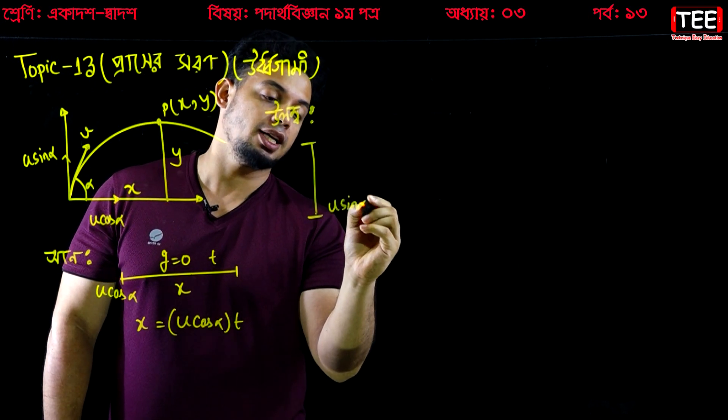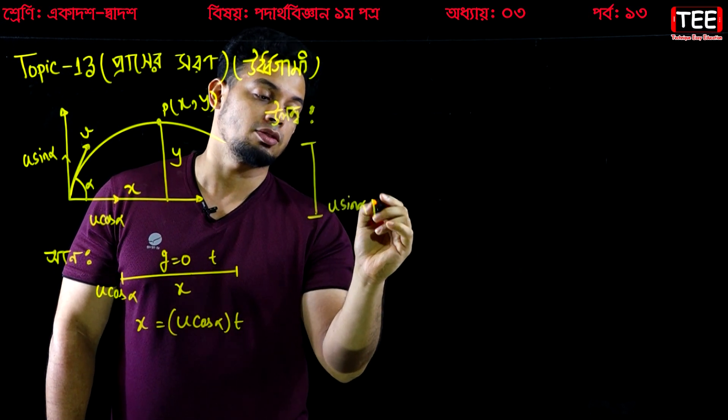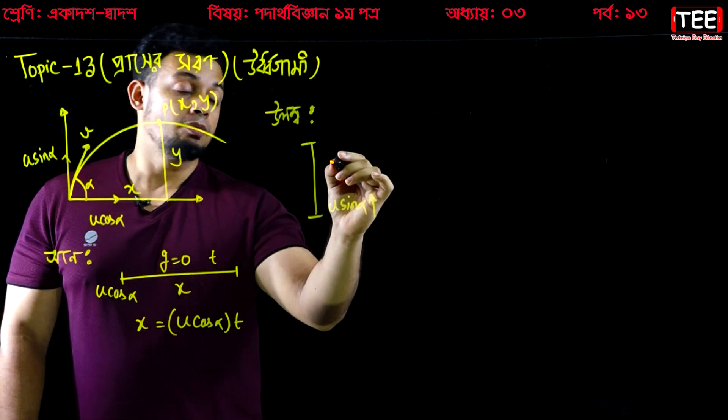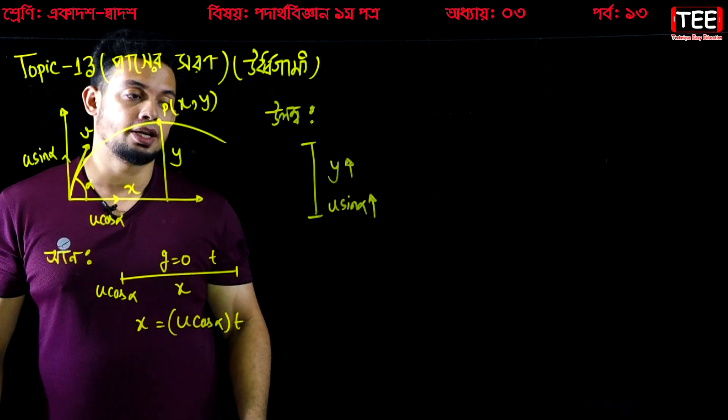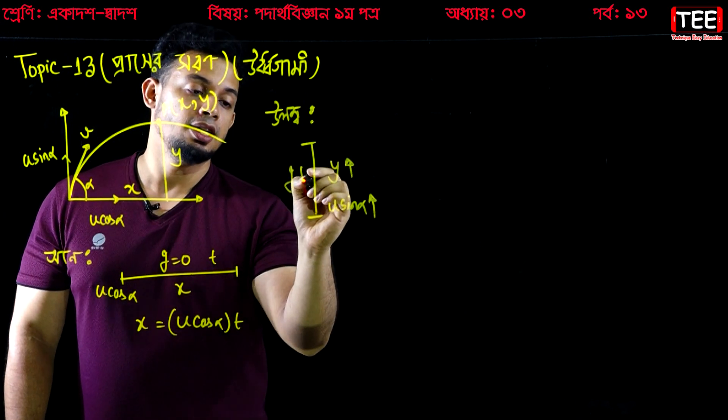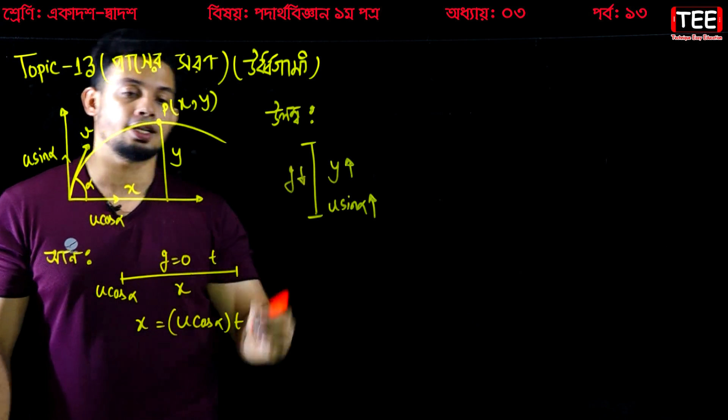u·sin(α) — where do we apply it? In the y direction. When we go up, we do it above. But here, g is always acting downward.